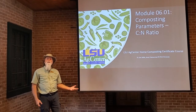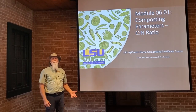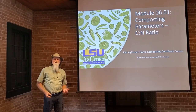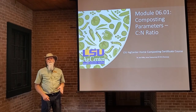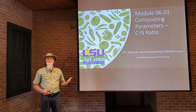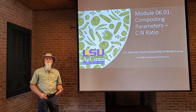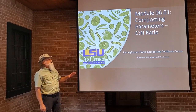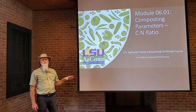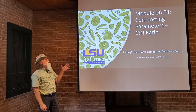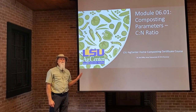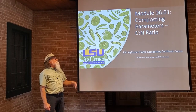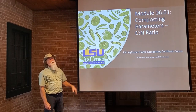Hi, class. The next couple of modules, we're going to be talking about the different parameters that you need to be aware of whenever you're talking about composting and making your compost pile. There are several different parameters, and the first one I'm going to cover is the carbon-nitrogen ratio — you'll often see it written as the CN ratio.